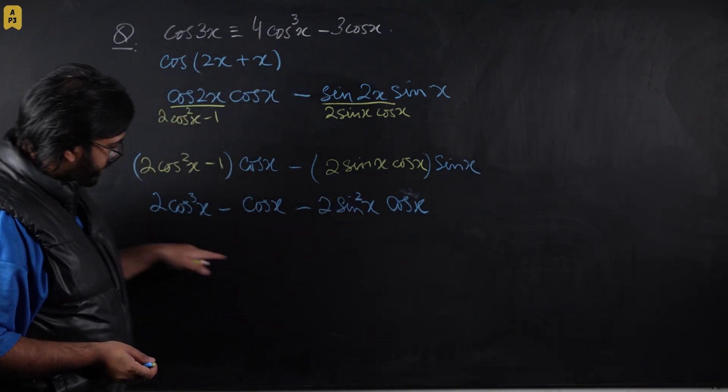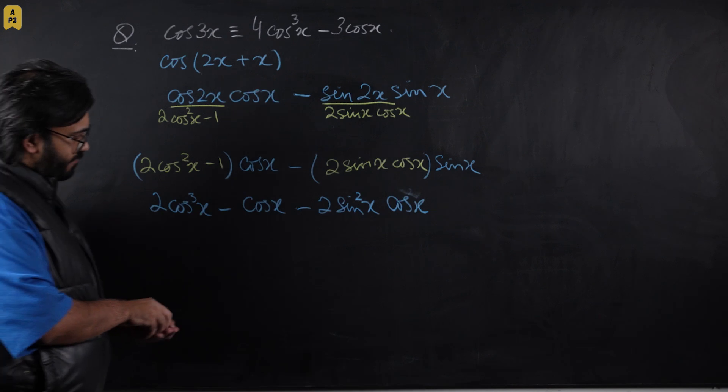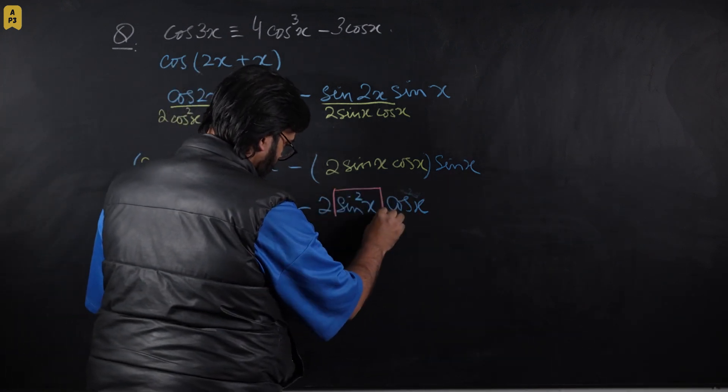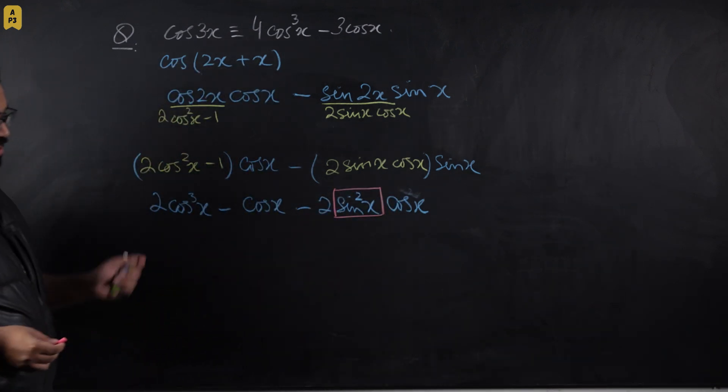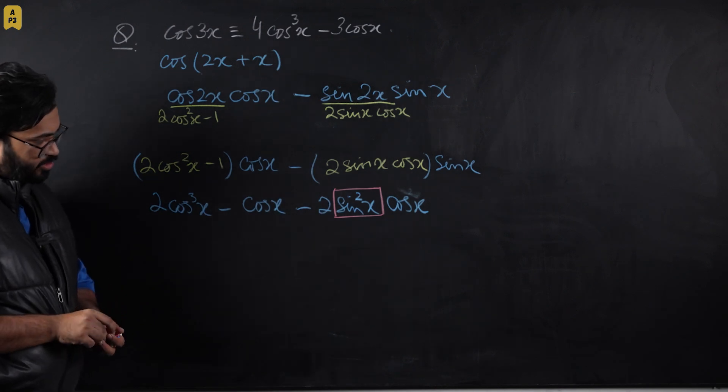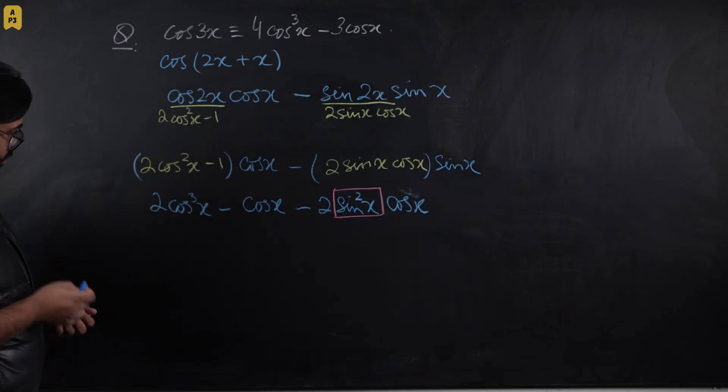The only trouble left with this entire expression is that we have to get rid of the sin² term to bring everything in terms of cos. We know a very easy substitution for that: 1 - cos²x.